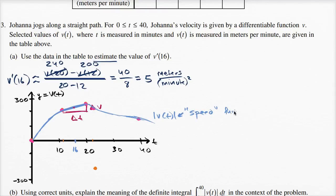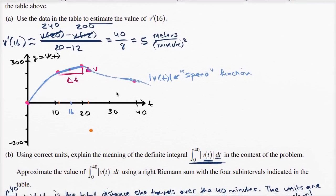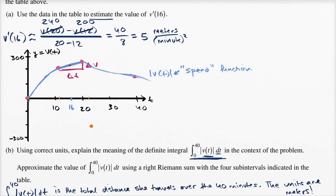If we wanted to integrate it, we can't do it exactly without knowing the exact function, but we can approximate the integral with a right Riemann sum. A Riemann sum breaks up this area into rectangles and finds the total area. There are a couple of ways: you could use the left boundary as the height, or the right boundary. They tell us to use a right Riemann sum, so for each interval we use the value of our function on the right side.